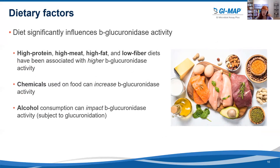Then we have dietary factors. Diet significantly influences beta-glucuronidase activity. High protein, high meat, high fat, and low fiber diets have all been associated with higher beta-glucuronidase activity. Chemicals used on food — such as herbicides, pesticides, and insecticides — can also increase beta-glucuronidase activity. And alcohol consumption can impact beta-glucuronidase activity as well, since it is subject to glucuronidation.